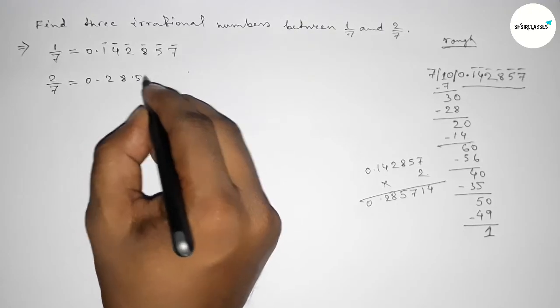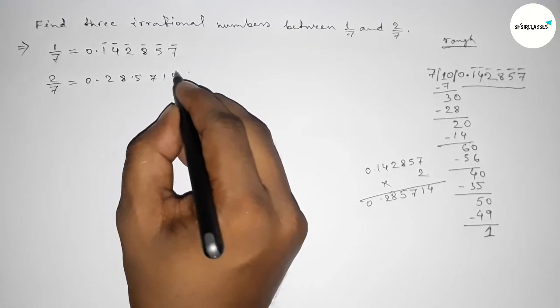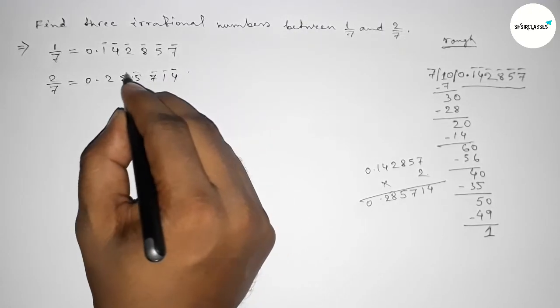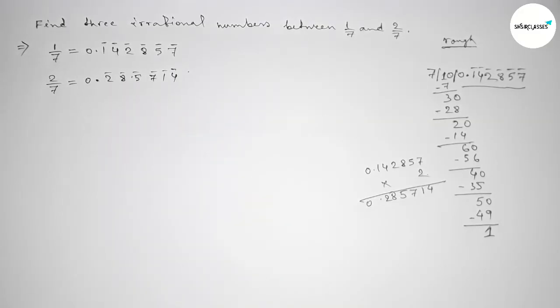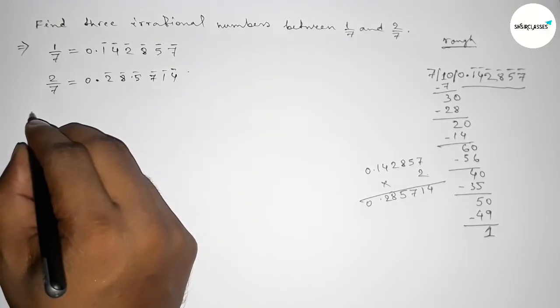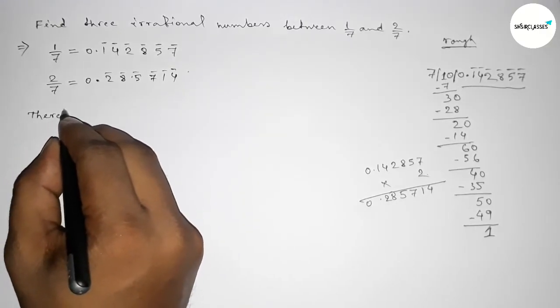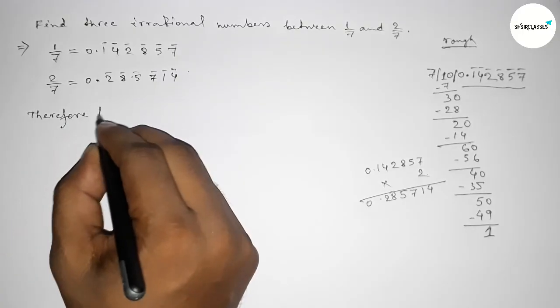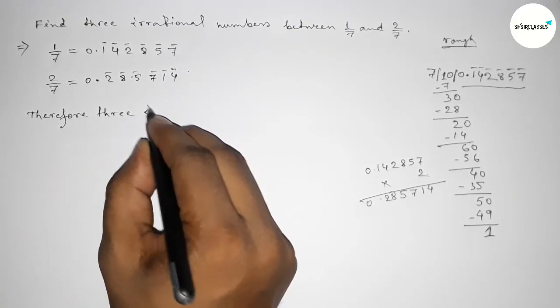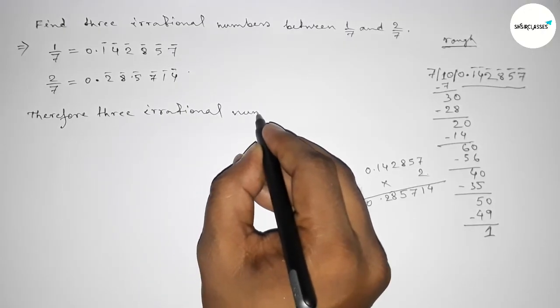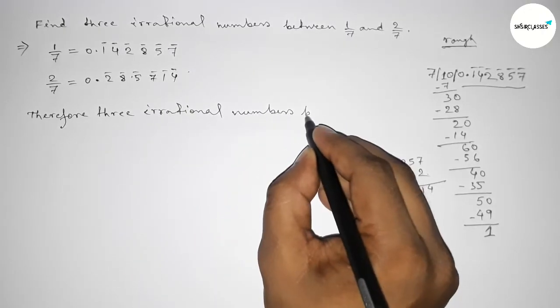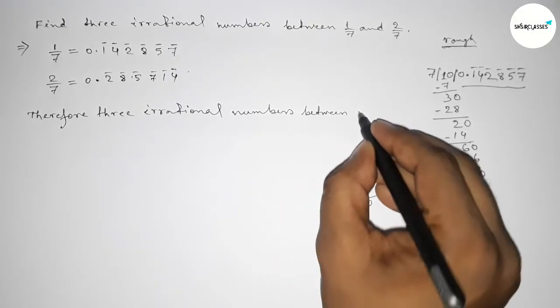Now between these two recurring decimal numbers there are infinite irrational numbers. But we have to find only three irrational numbers between these two recurring decimals, or 1 over 7 and 2 over 7.